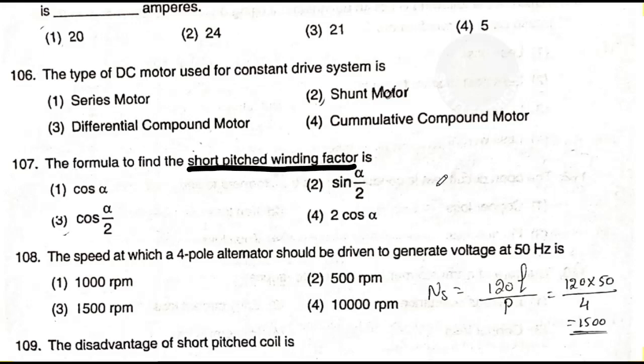Question number 107: The formula to find the short pitch winding factor is — option one: cos alpha; option two: sine alpha by two; option three: cos alpha by two; option four: two cos alpha. The answer is option three — cos(alpha/2). The short pitch winding factor is given by cos(alpha/2).